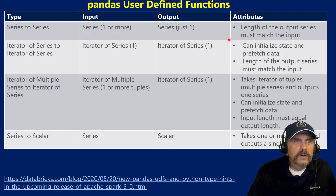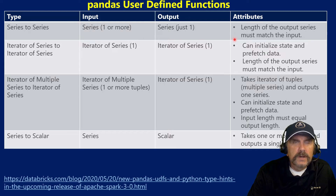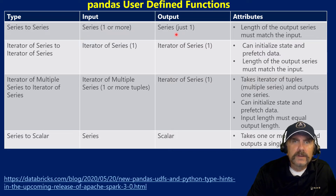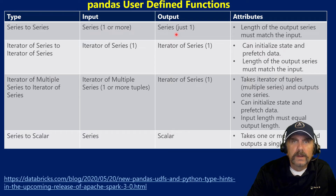Let's take a look at these types of UDFs more closely. In a series to series, you pass in a series — but you can also pass in multiple series as input parameters. So one or more input series, but you can only output a single series. For example, maybe you pass in a date and you'd like to return the year from that date — that's an example of a series to series function.